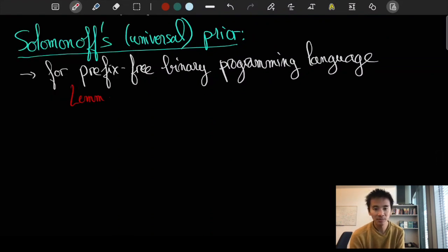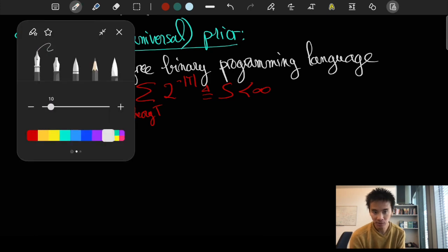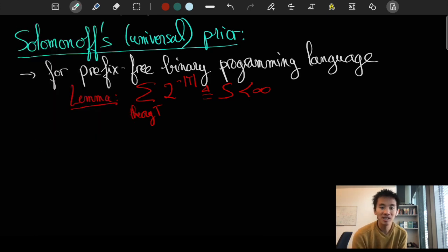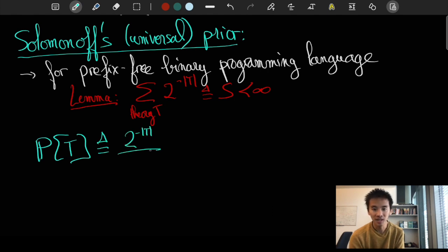In such a case, it can be shown through the Kraft-Macmillan inequality that the sum of the 2 to the power minus length of T converges and is at most 1. Let us call S the sum. The prior credence of the program T can be naturally given by 2 to the power minus length of T divided by the normalizing constant S.